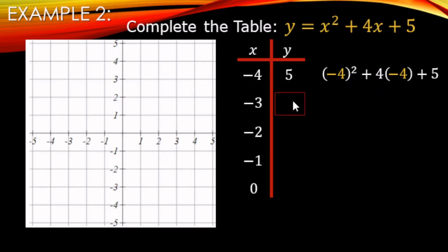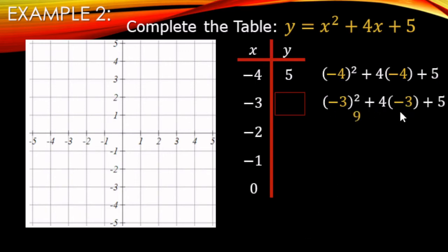Next, x = negative 3: negative 3 squared is positive 9, 4 times negative 3 is negative 12, plus 5. I group the positives first: 9 plus 5 makes 14, then minus 12 makes positive 2. You can also go left to right — 9 minus 12 is negative, then plus 5 brings you back positive — but grouping additions and subtractions reduces mental math errors.